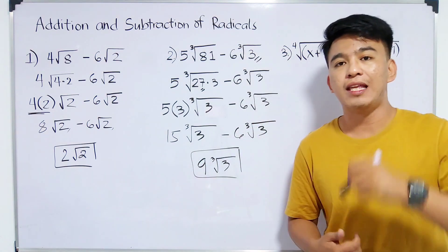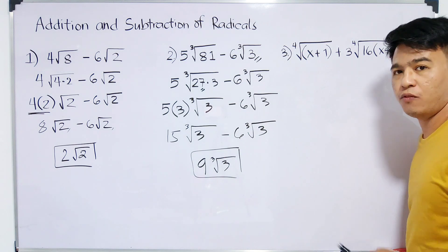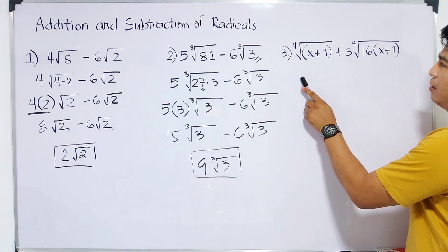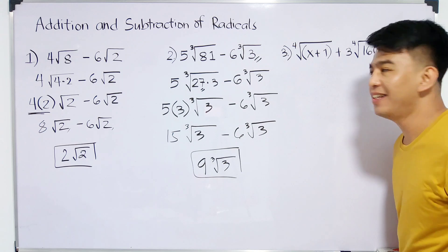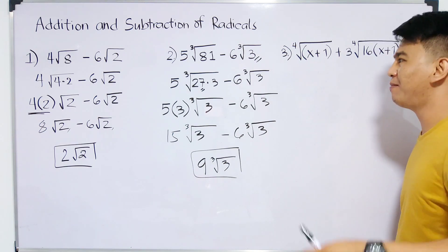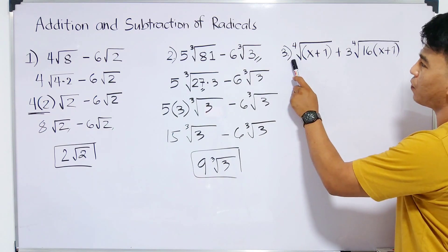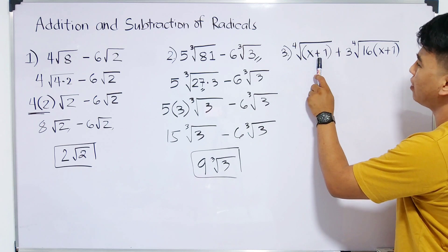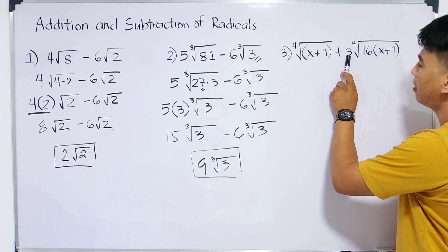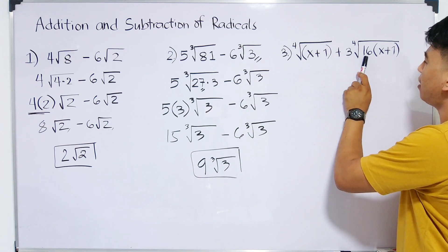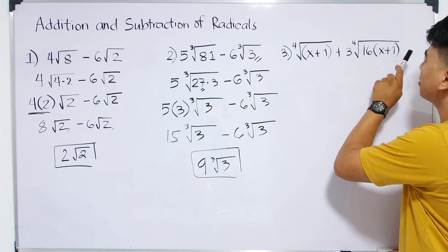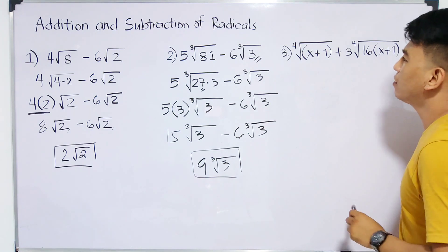And let's continue with the last item. With the last item, it seems difficult. We have the 4th root of x plus 1 plus 3 times the 4th root of 16 times (x plus 1).